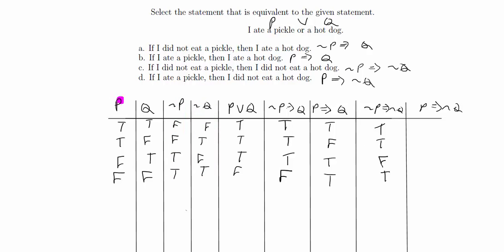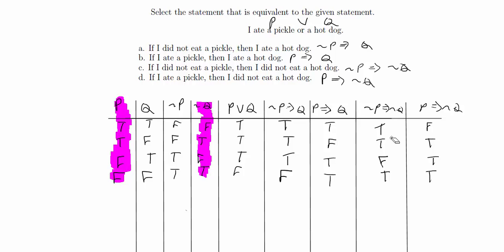For not P implies not Q: not P is false in the first two rows, so those are true. Then true implies false is false, and true implies true is true. For P implies not Q: true implies false is false, true implies true is true, then false implies true and false implies true are both true. And we're done with our truth table.